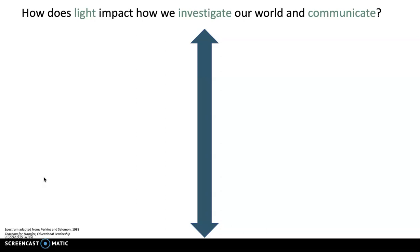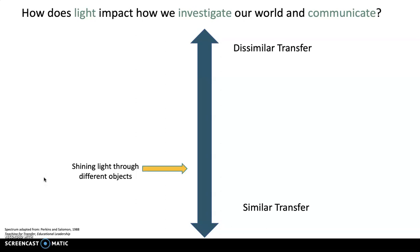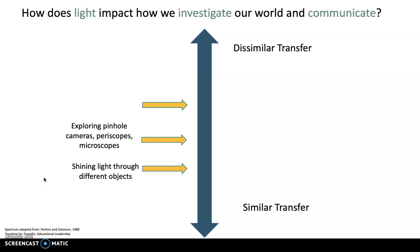Here's a science example: how does light impact how we investigate our world and communicate? Starting with similar transfer, we might have students shine light through different objects. Then something a little more complex, like exploring pinhole cameras, periscopes, and microscopes — what's the role of light in those situations? And then maybe transfer to a situation where students design a museum experience using light. Just quick examples of how we might teach for transfer.